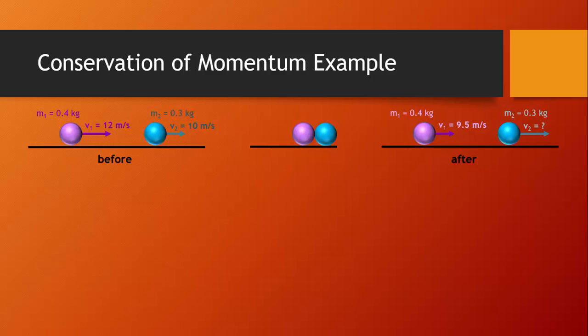Let's try to solve this methodically and look at one part of this problem at a time. Let's start with the before side. Beforehand, the momentum of the system is just the sum of the momentum of each ball — we'll call them 1 and 2. So beforehand, we have a total momentum equal to the momentum of the purple ball plus the momentum of the blue ball, P1 plus P2.